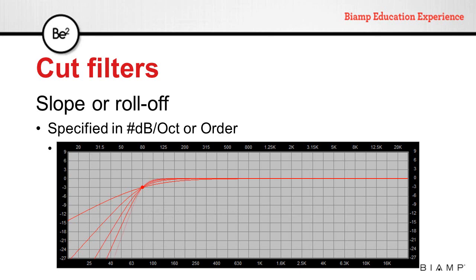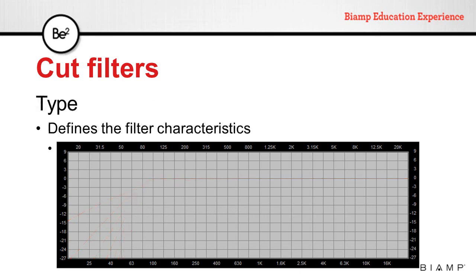Filters can have slopes up to 48 dB per octave or even more. The type defines the behavior of the filter at the cutoff frequency, frequency response, delay, etc. The most common filter types are Linkwitz-Riley and Butterworth. Note how they differ at the cutoff frequency.